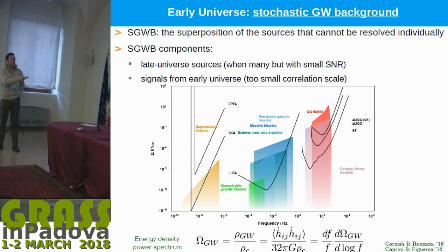If you have many sources with a small signal-to-noise ratio, you detect them as a superposition of sources that cannot be resolved individually. For this reason, they constitute a stochastic gravitational wave background.